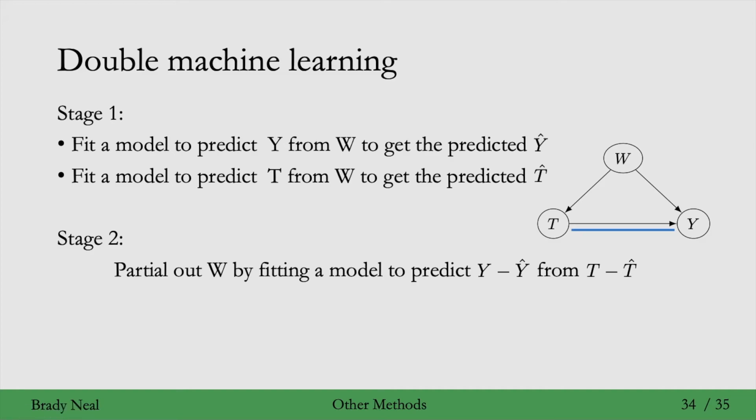And this is double machine learning in the sense that we use machine learning a first time in stage one, and then on top of the models that we get from stage one, that's Y-hat and T-hat, then we fit another machine learning model on top of those to predict these residuals.